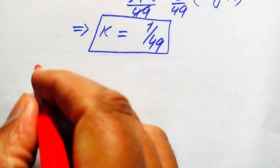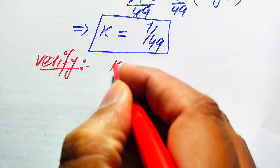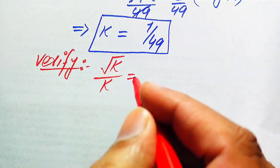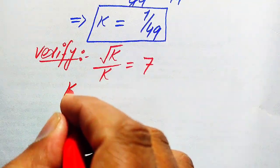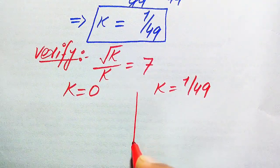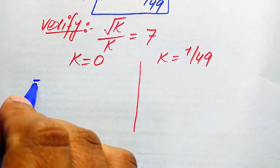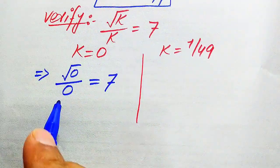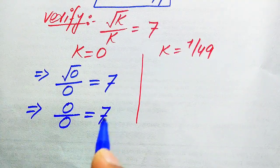We now verify whether these two values of k satisfy the given equation. The given equation is: k root of k divided by k equals 7. To verify k equals 0, we substitute into the left-hand side, giving square root of 0 divided by 0, which simplifies to 0 over 0.